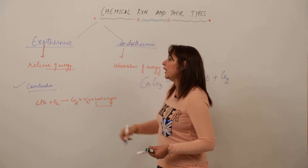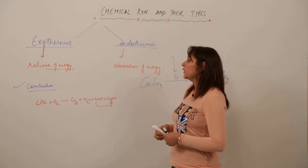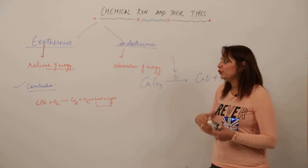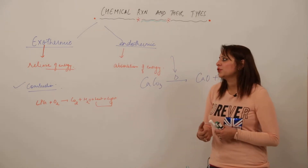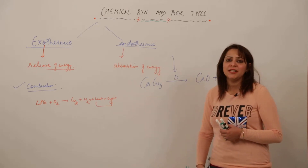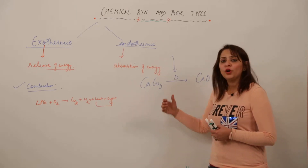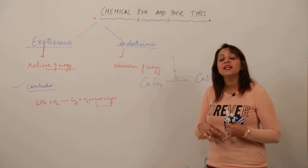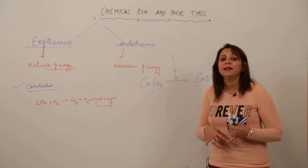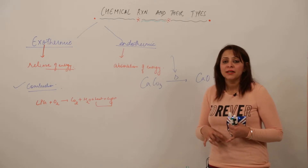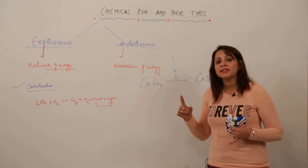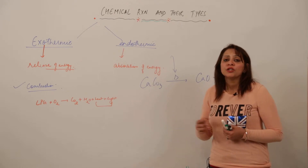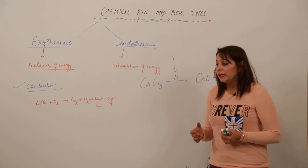According to energy changes, reactions are categorized as exothermic and endothermic. Moreover, we have a few more reactions based on energy changes. We have already discussed photochemical reactions, in which energy is supplied in the form of light — for example, AgCl breaking up to form Ag and Cl₂ is a photochemical reaction.